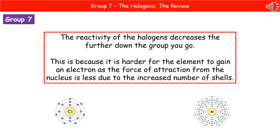As we go down group 7, reactivity decreases - the opposite of the alkali metals. The reason is the force of attraction between the nucleus and the outer shell electrons. Halogens need to gain 1 more electron. Further down the group, there are more electron shells, so the outer shell is further from the nucleus, the force of attraction is weaker, and it's harder to gain that extra electron. That's why reactivity decreases down the group.